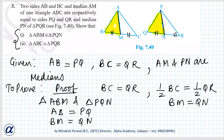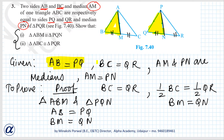In this question it is given that AB equals PQ, BC equals QR, and median AM equals median PN. So what is given: AB equals PQ, BC equals QR, AM and PN are medians and they are equal.